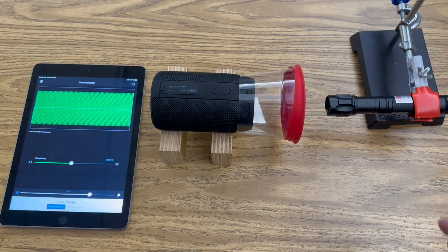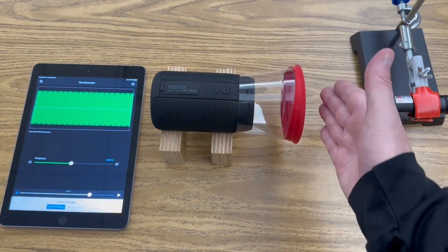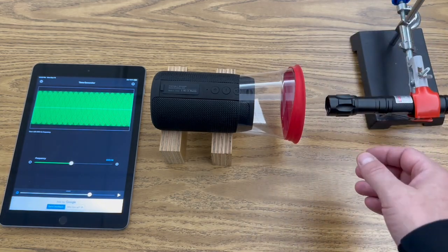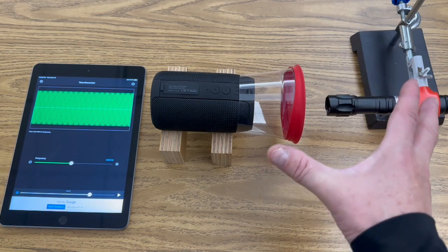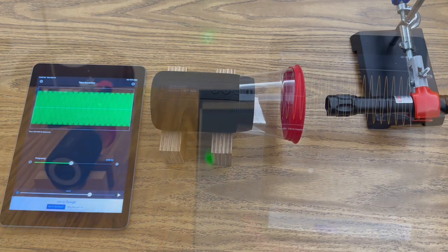So what we'll do is we'll allow that sound to cause the balloon diaphragm to vibrate. And then when the laser bounces off that mirror, it'll project patterns for each frequency that you see on the tone generator.